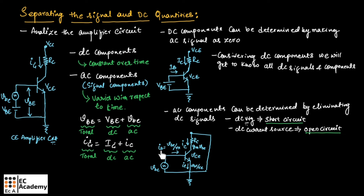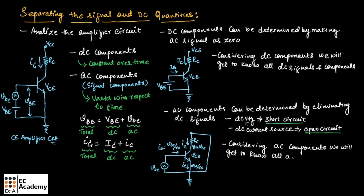We can find the current IB, which is a small signal or AC signal that can be given as VBE divided by R pi. We can find IC which is equal to gm into VBE, and we can find IE which is equal to VBE divided by RE. So by considering AC components, we will get to know all AC signals and components. This figure shows the expressions for current IB, IC, and IE obtained for the small signal VBE. In this circuit, the small signal VBE or AC signal VBE is applied and we have obtained the expressions for the different current components.